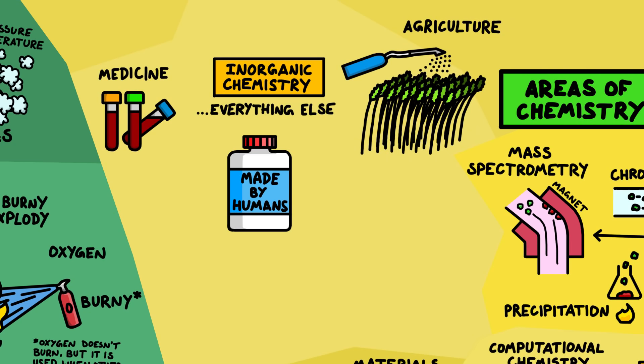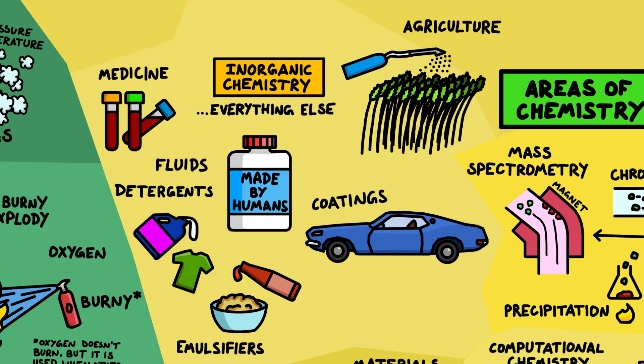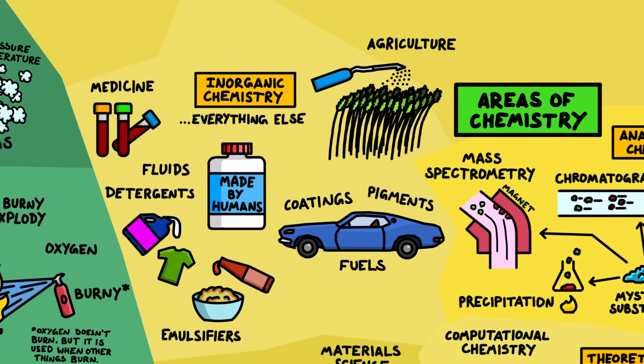There's medicine and agriculture, special fluids like detergents or emulsifiers, special coatings, materials, pigments, or fuels for many industrial purposes. Within chemical production itself, catalysts are very important as they speed up other chemical reactions.